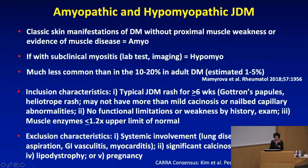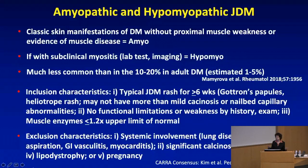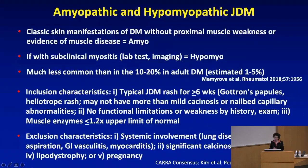Inclusion criteria recently proposed include: typical rash for at least six weeks, no more than mild calcinosis or nail bed capillary abnormalities, with heliotrope rash and Gottron's papules or erythema; no functional limitation or weakness by history or examination; and muscle enzymes less than or equal to 1.2 times the upper limit of normal. Exclusion criteria include systemic involvement, lung disease, dysphagia, aspiration, GI vasculitis, myocarditis, significant calcinosis, skin ulcers, and lipodystrophy.